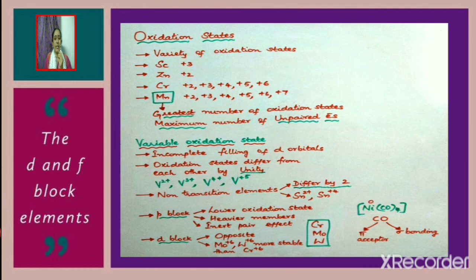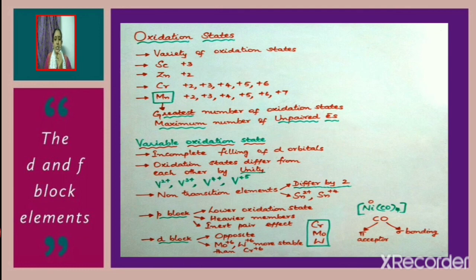One of the characteristic properties of transition elements is that they exhibit variable oxidation states. Scandium exhibits an oxidation state of +3 whereas zinc exhibits +2. The different oxidation states possible for chromium are +2, +3, +4, +5, and +6. For manganese, the oxidation states range from +2 to +7. It is manganese which shows the greatest number of oxidation states, because it has the maximum number of unpaired electrons.